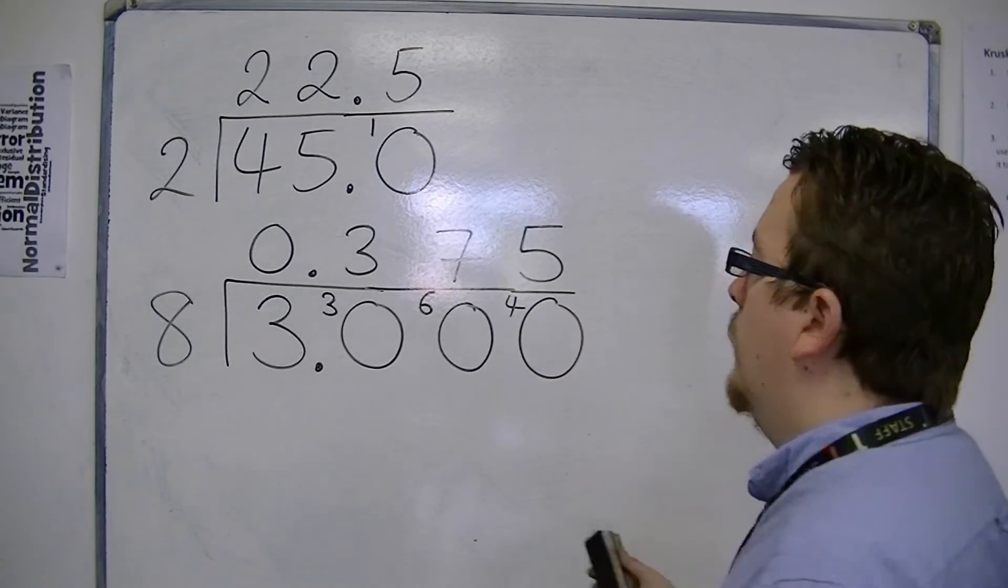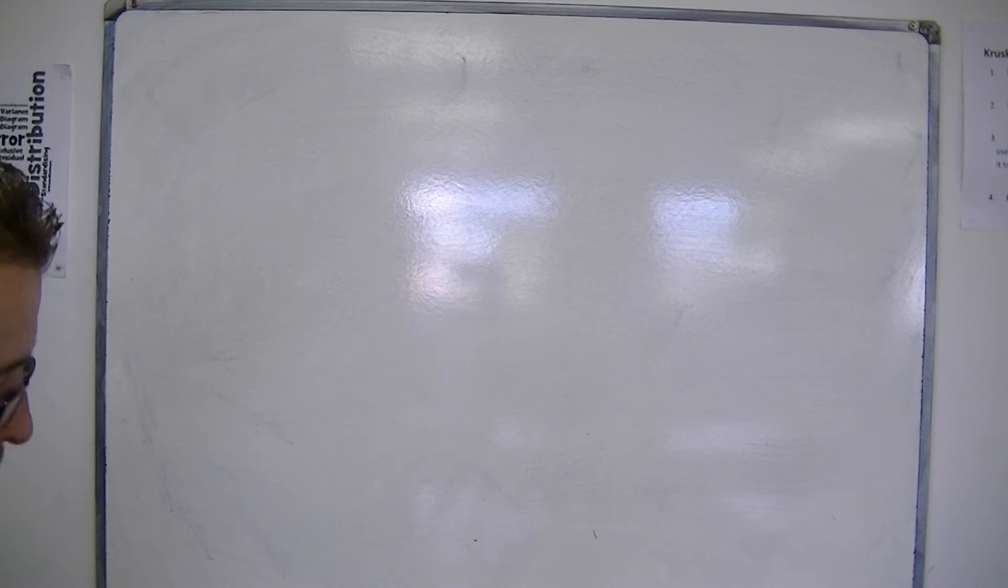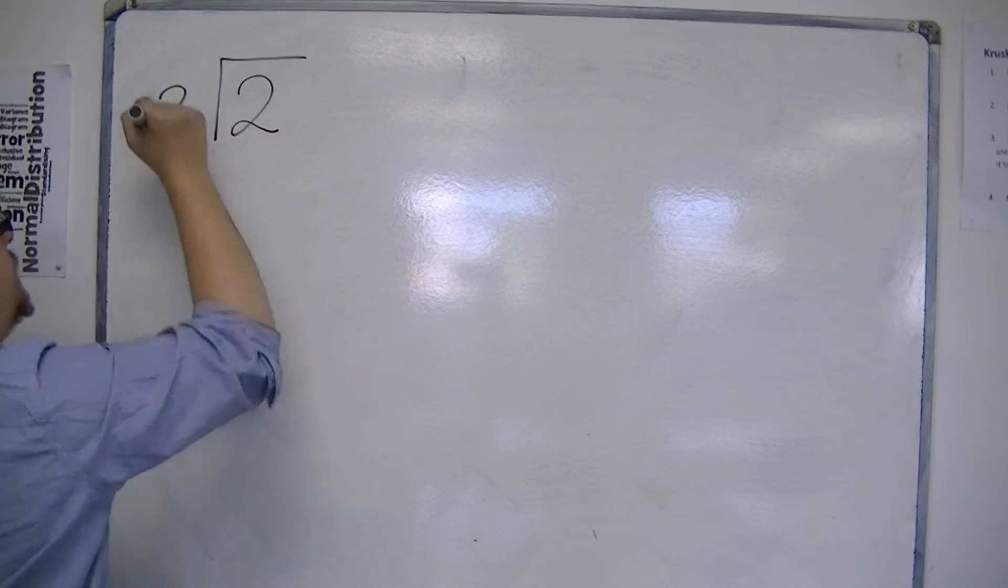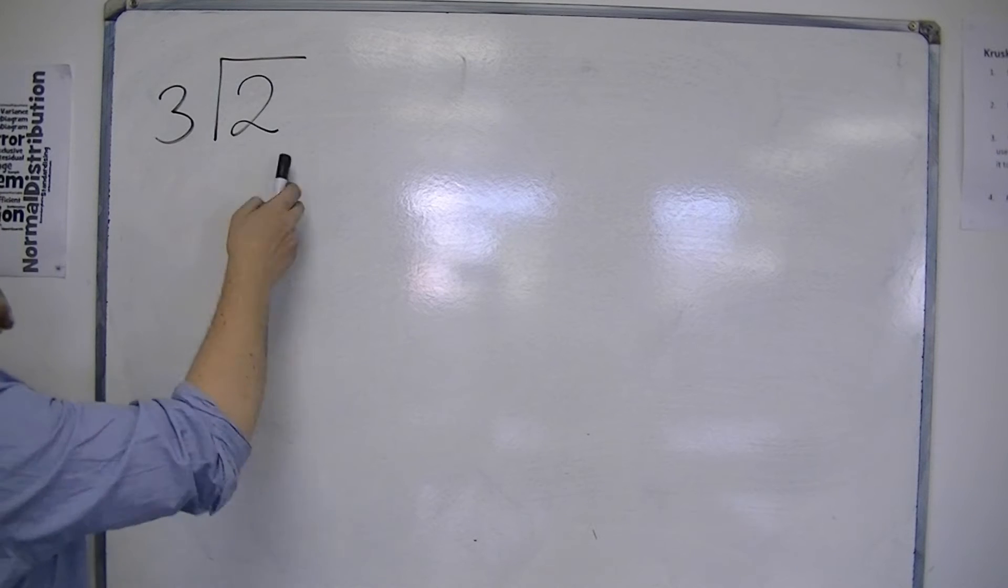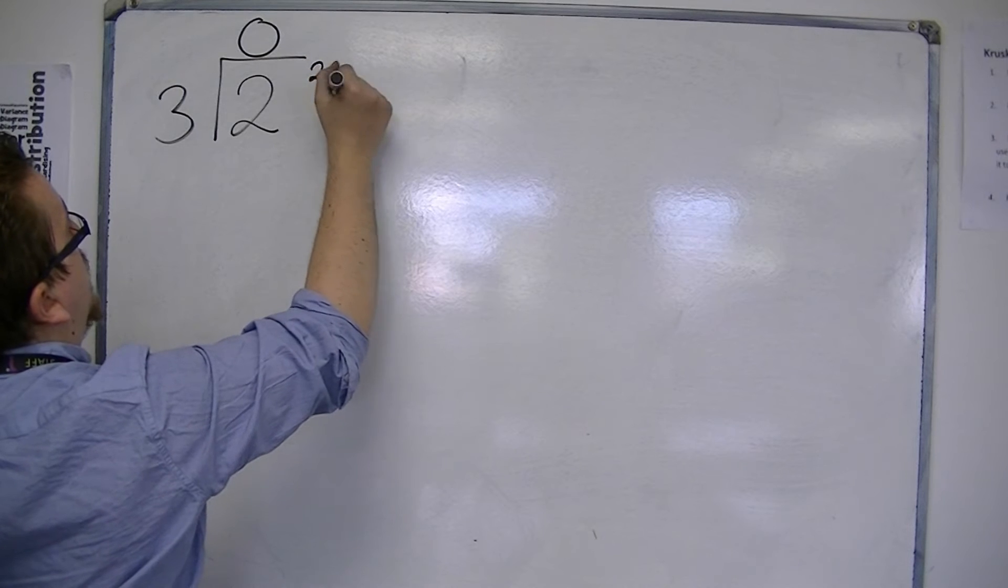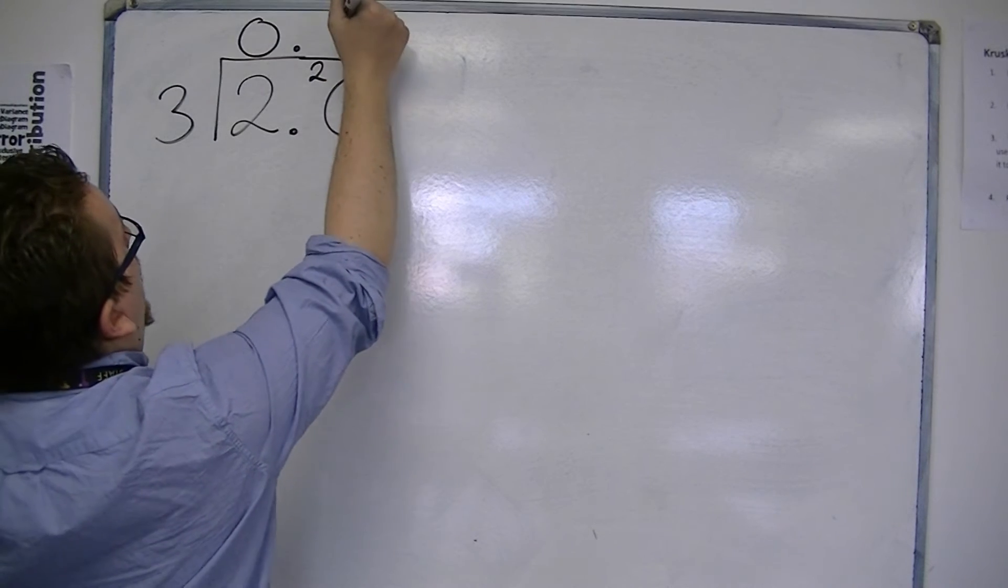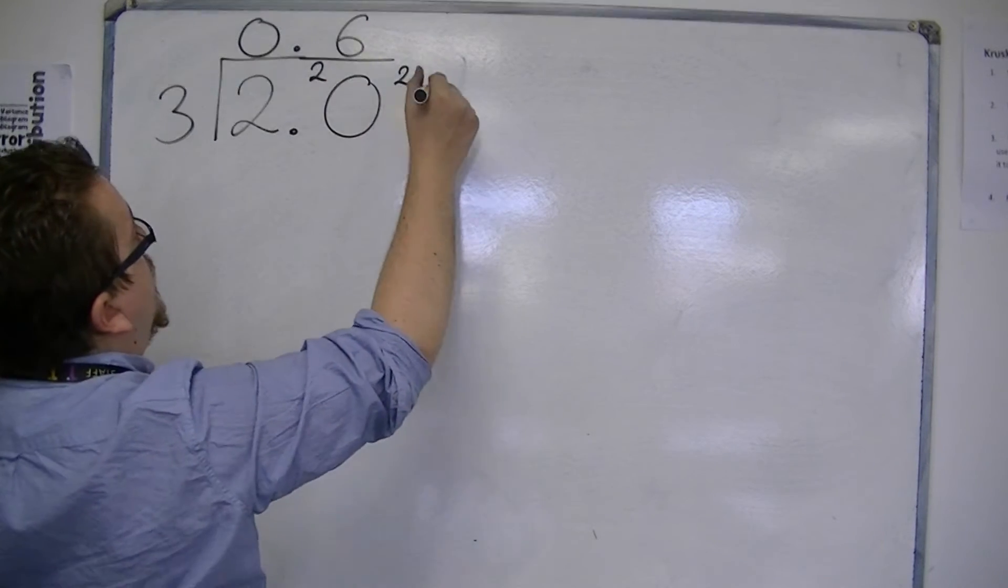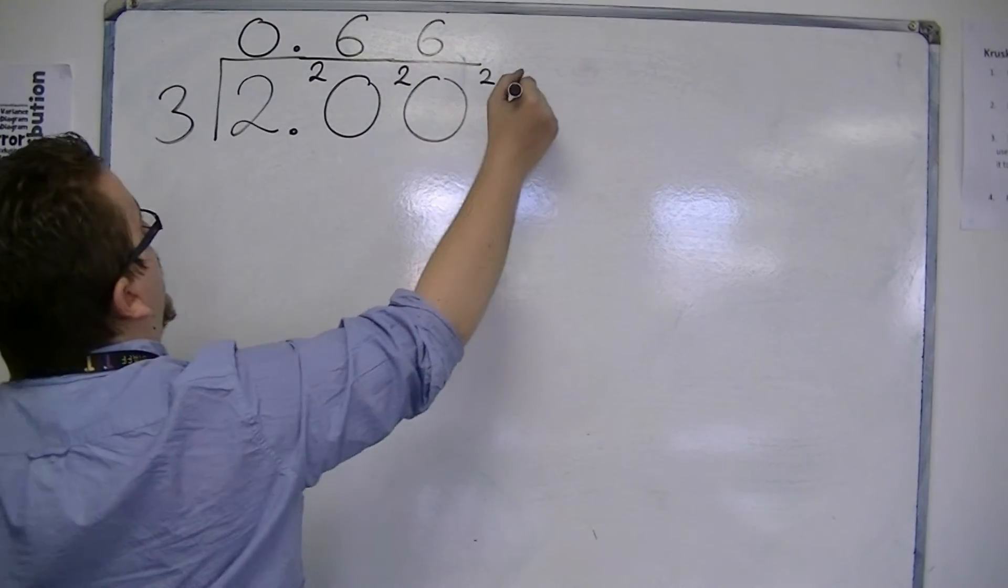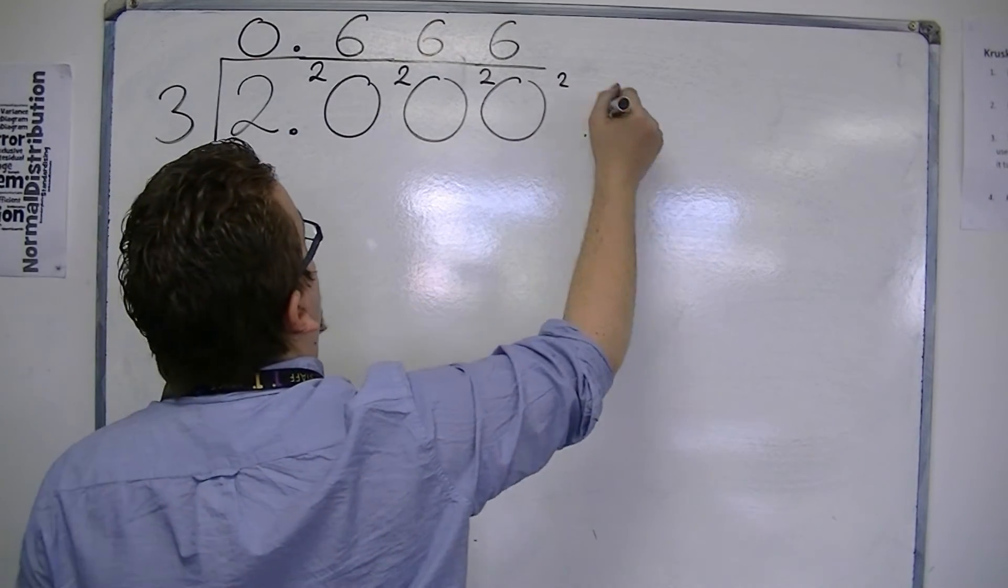But in some cases, we're going to find numbers don't end. If we do 2 divided by 3, then 3s into 2 go 0 with 2 left over. We need to put in the 0 and decimal points. 3s into 20 go 6 with 2 left over. 3s into 20 go 6 with 2 left over. 3s into 20 go 6 with 2 left over.